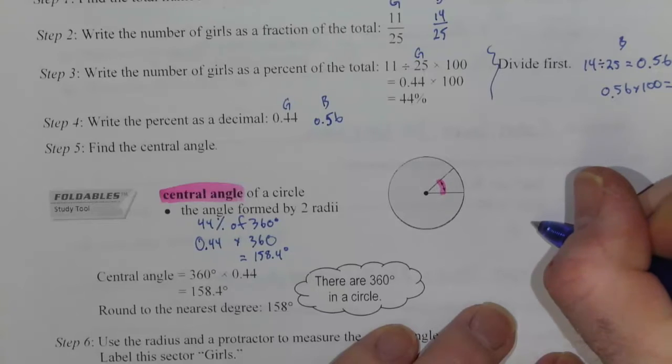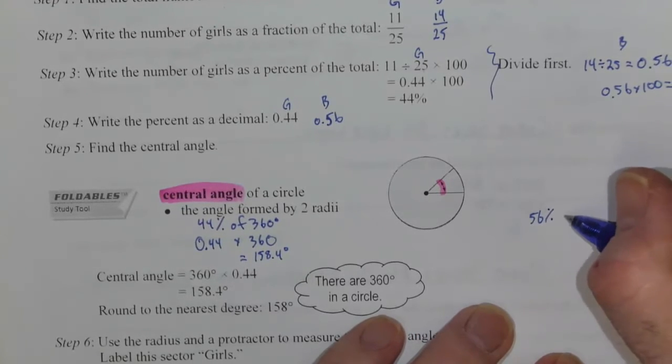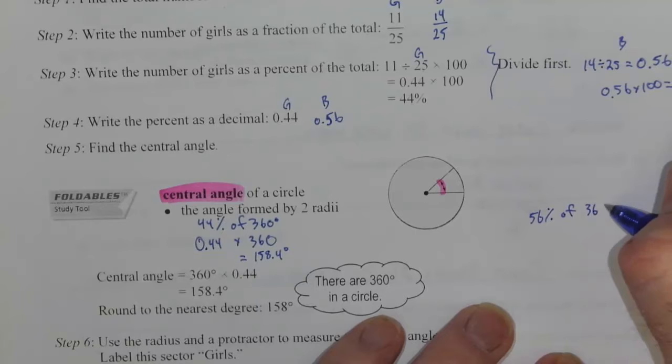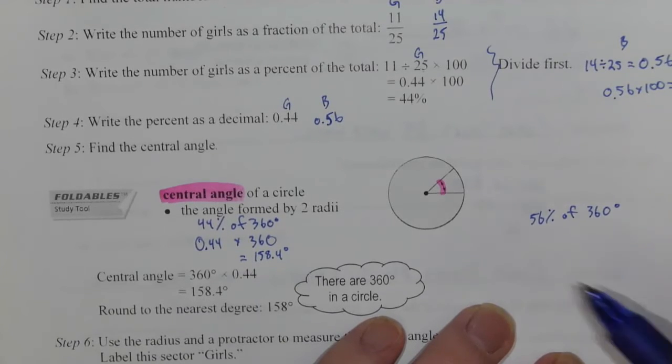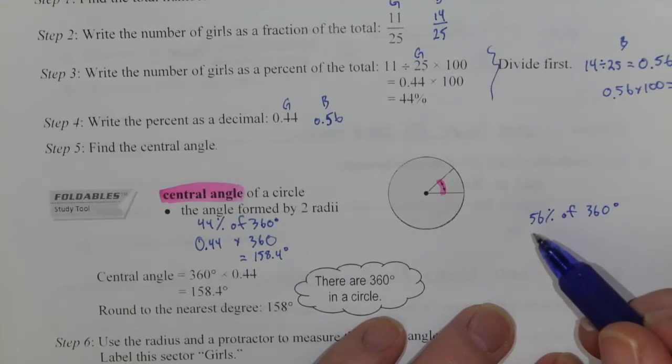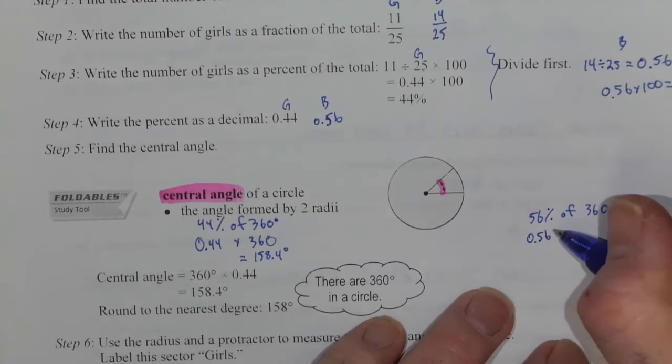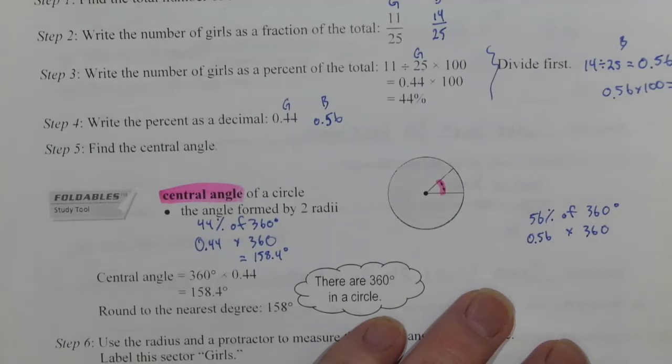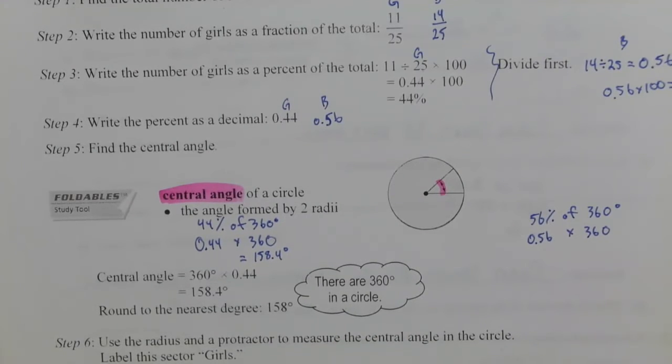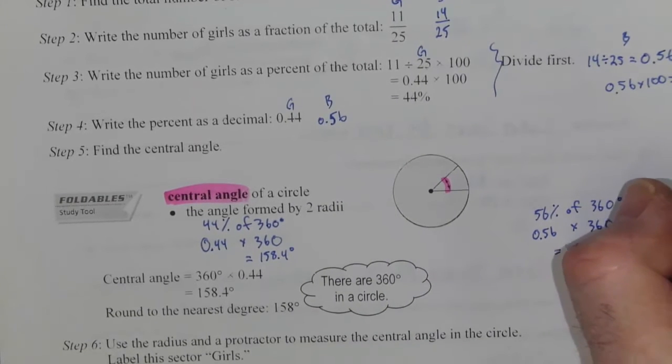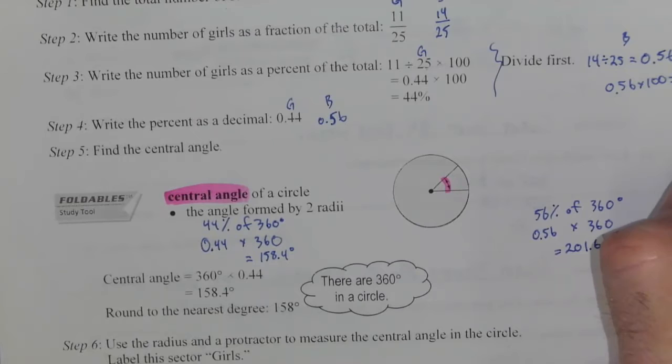We're looking at 56 percent of 360 degrees. Once again, 360 degrees makes a complete circle. We want to figure out how big the piece is going to be with 56 percent of it. So then 0.56 times 360, and when you do that, 0.56 times 360, you're going to end up with 201.6 degrees.